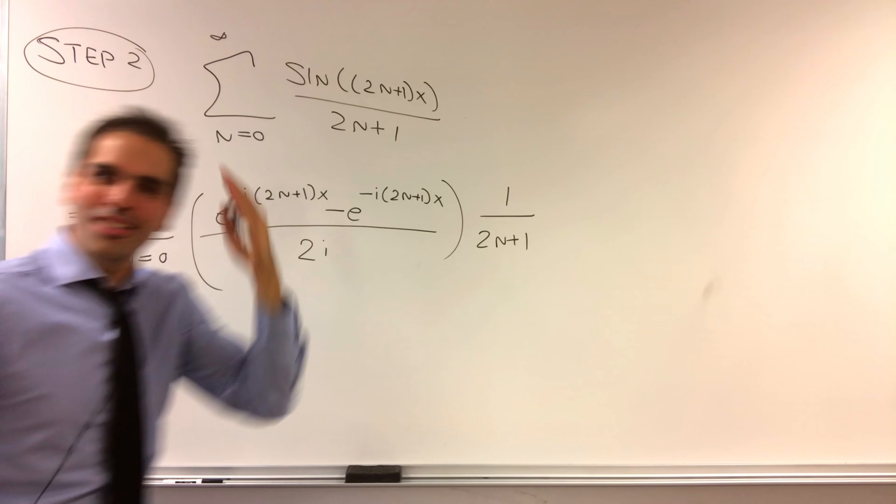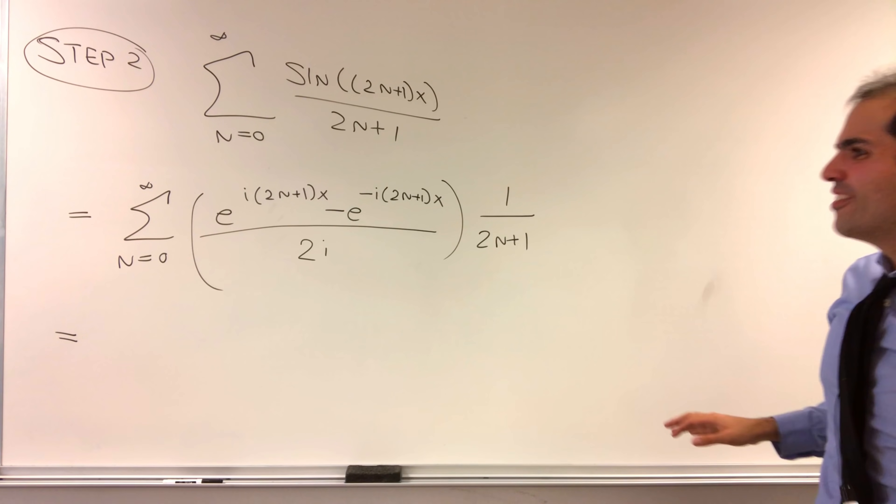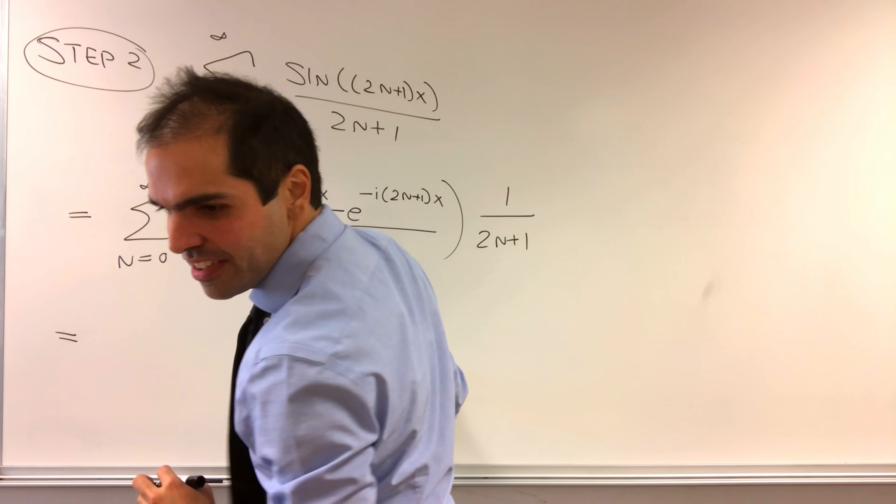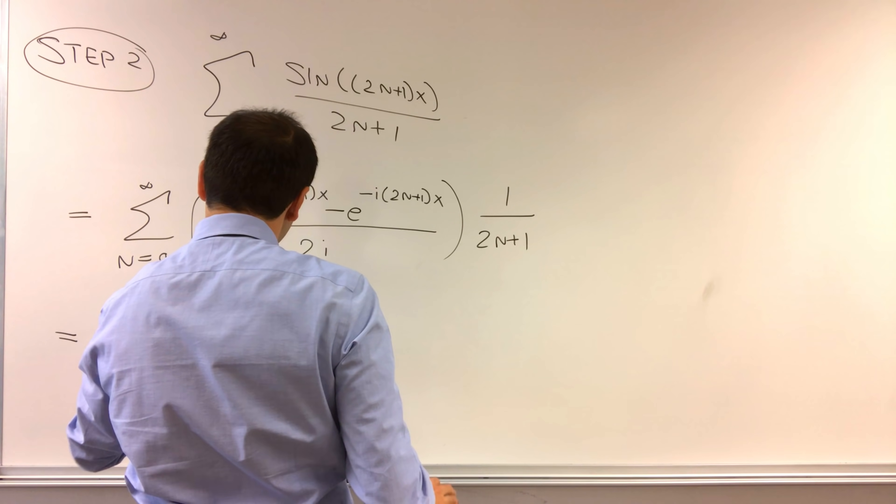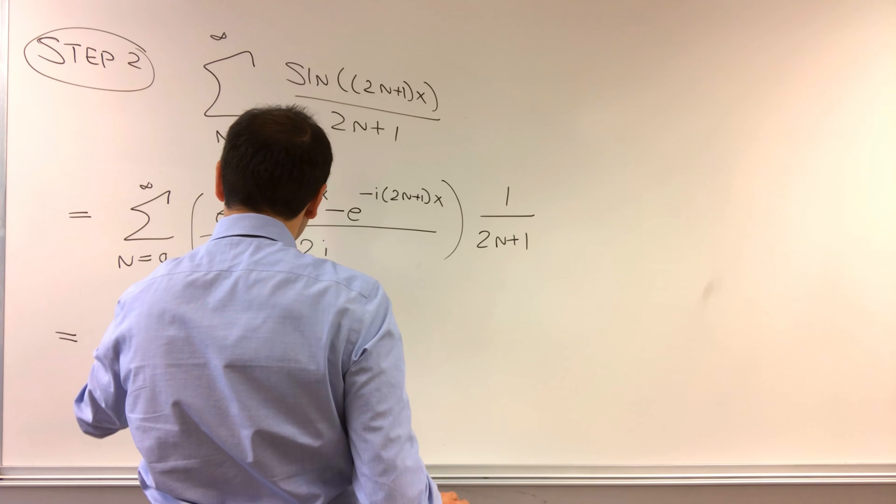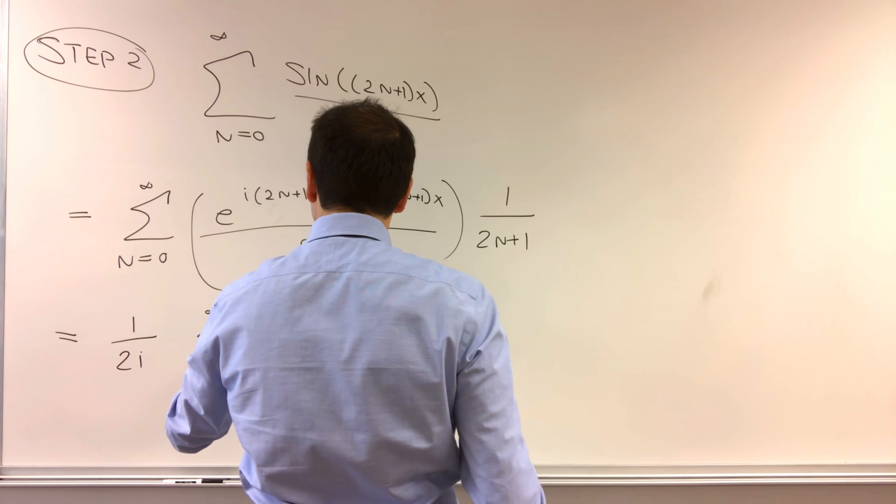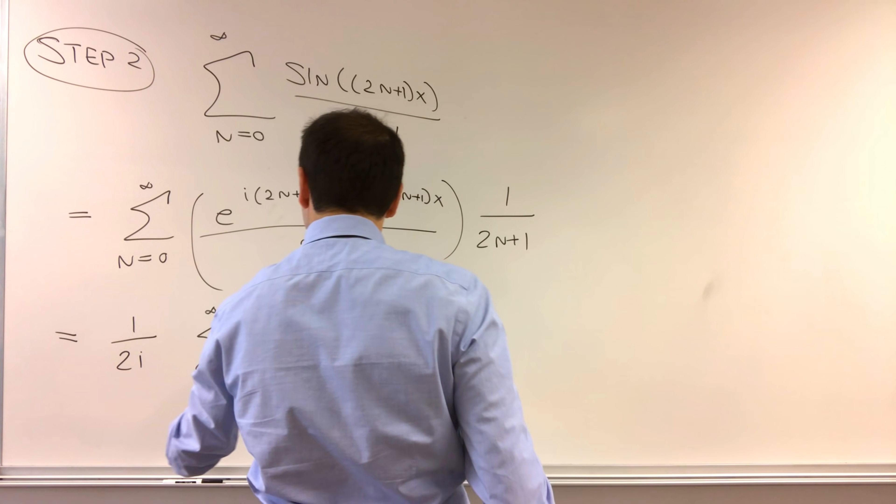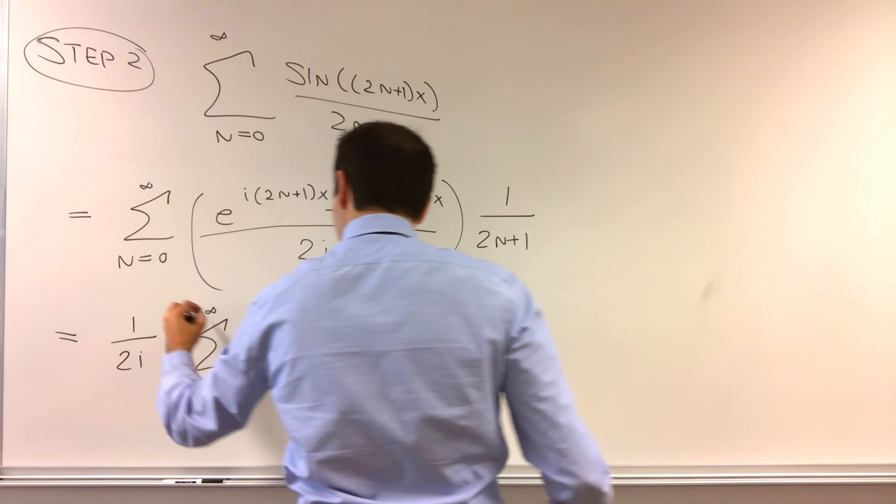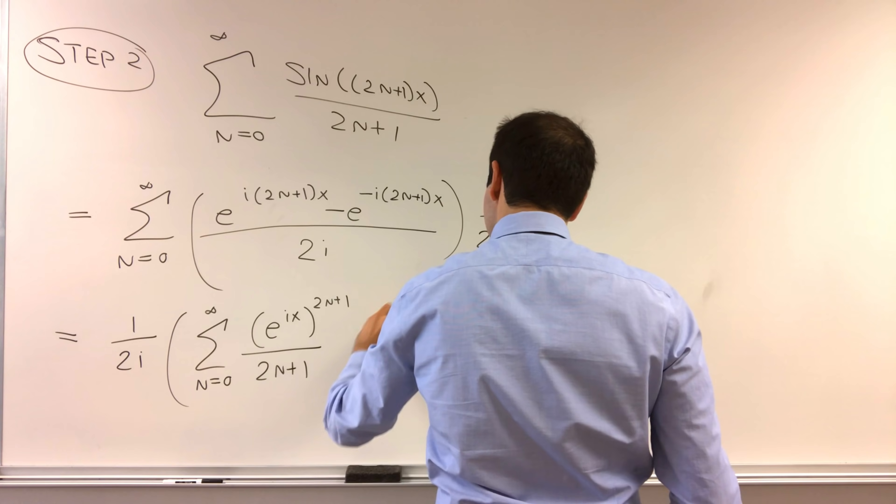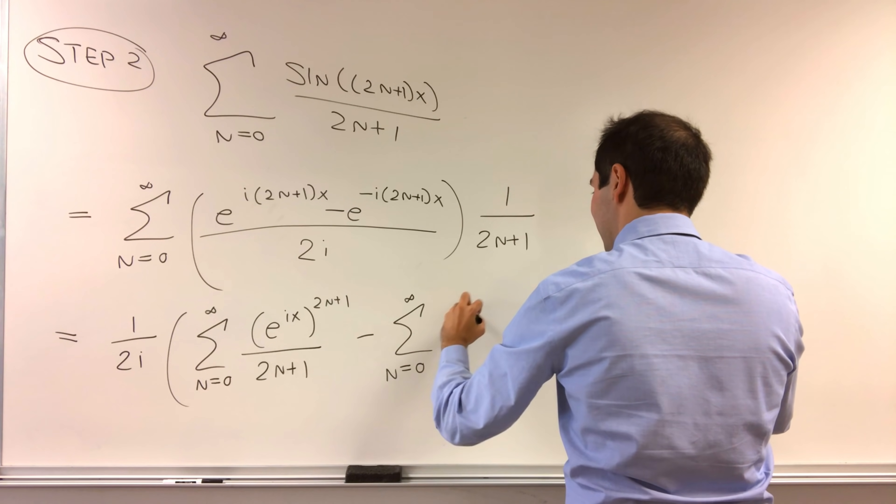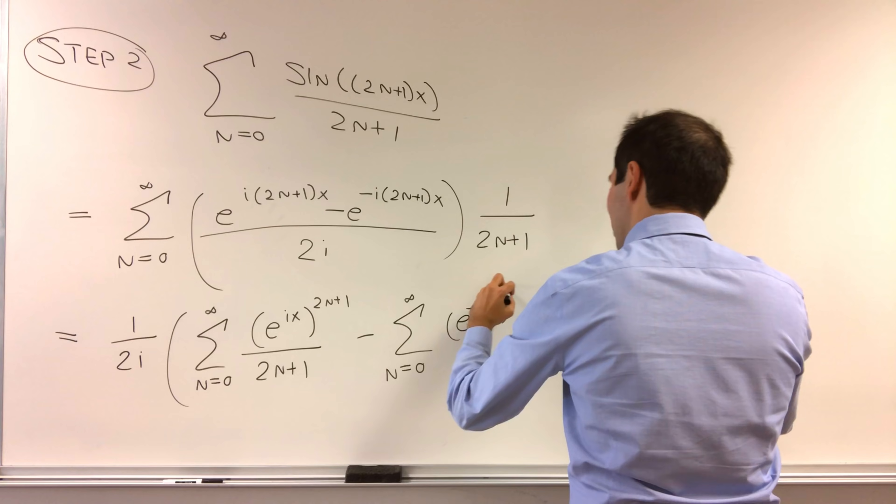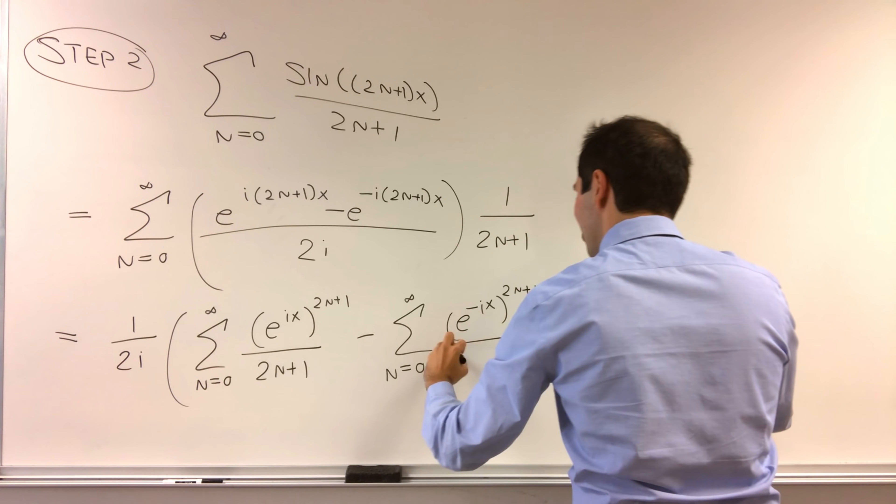And what we get is, in the end, the sum, or from 1 over 2i times the sum from n from 0 to infinity of e to the ix to the 2n plus 1 over 2n plus 1 minus the sum from n from 0 to infinity of e to the minus ix to the 2n plus 1 over 2n plus 1.